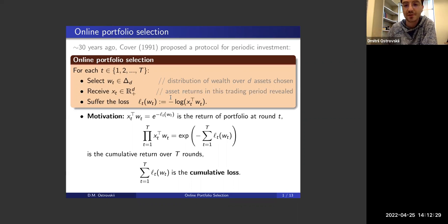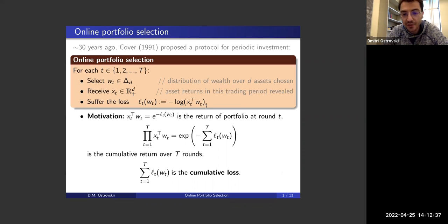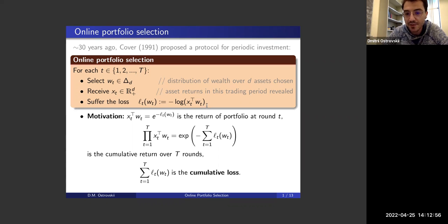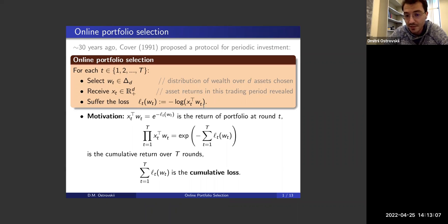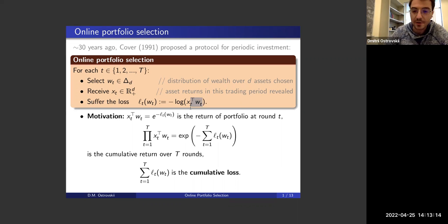As soon as x_t is returned, you suffer the loss which is the minus logarithm of the inner product x_t^T w_t. The reason for the minus log is that it's a multiplicative model of returns — returns are multiplicative, like percentages of growth. x_t^T w_t is our aggregate return of our portfolio, since we average over assets and x_t are their prices.